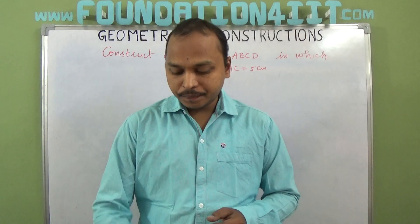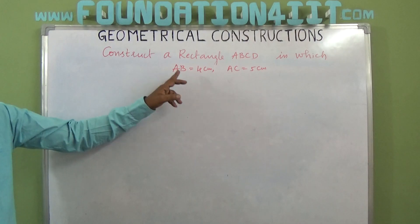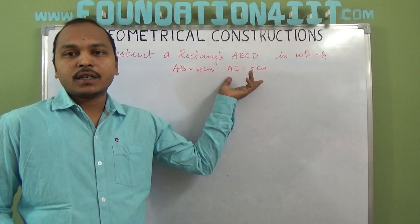How to construct a rectangle. Observe the question. In a construction of rectangle ABCD, AB is 4 cm and AC is 5 cm. AC is a diagonal.